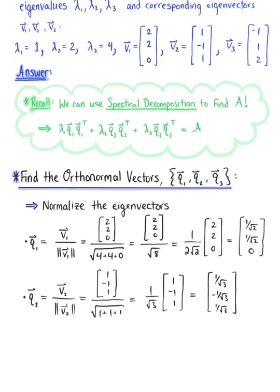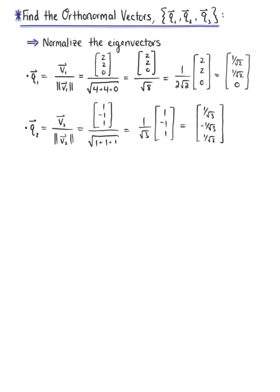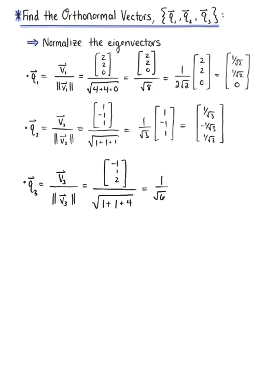We now find vector q sub 3 by normalizing eigenvector v sub 3, which has components negative 1, 1, 2. Dividing by its length — the square root of 1 plus 1 plus 4, which is root 6 — gives us the scalar multiple 1 over root 6, multiplied by the vector with components negative 1, 1, 2. Distributing, we get q sub 3 equal to the vector with components negative 1 over root 6, 1 over root 6, 2 over root 6.